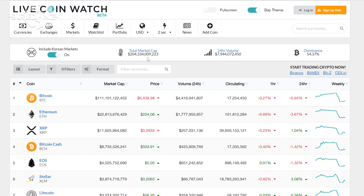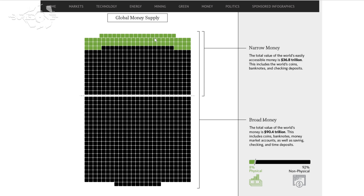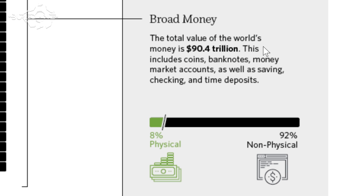I'm going to give you a small example on how much money there actually is. If you take the entire world's supply of broad money — coins, banknotes, money in market accounts, savings, checkings, and time deposits — only 8% is physical. As you probably know about inflation, you can only have 8% in coins and notes. So 92% is non-physical, but this virtual money can be converted into crypto as we can put a value against US dollars with Bitcoin.